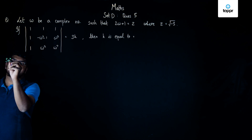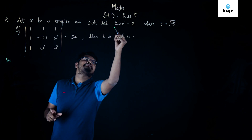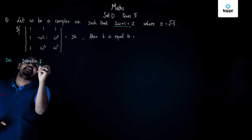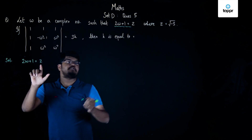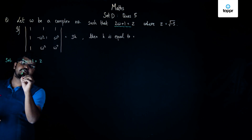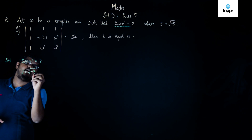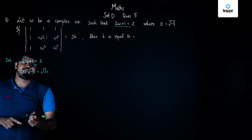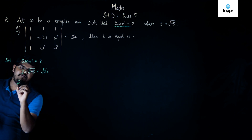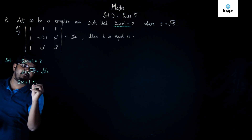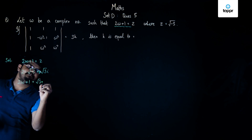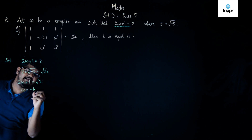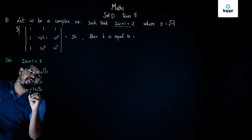In the given question, the only thing which is given clearly to us is that 2 omega plus 1 is equal to z. We also know that z is equal to square root of minus 3, or we can say that z is actually equal to root 3 iota. If we substitute this value in the equation, we get 2 omega plus 1 is equal to root 3 iota, and therefore omega is equal to minus 1 plus root 3 iota by 2.